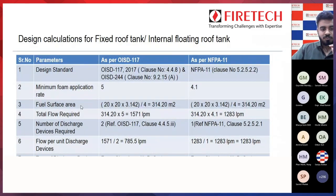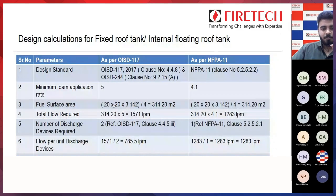Now we have to find the fuel surface area. We use the formula pi/4 × D², so: 3.142 × 20 × 20 / 4. We get the fuel surface area, which remains the same for both OSD and NFPA.